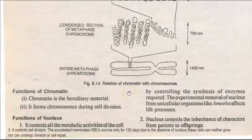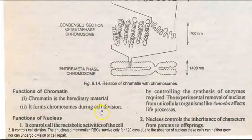Functions of the chromatin: Chromatin is a hereditary material — it is made up of DNA. It also forms the chromosome, the higher order structure, during the process of cell division, especially during metaphase.